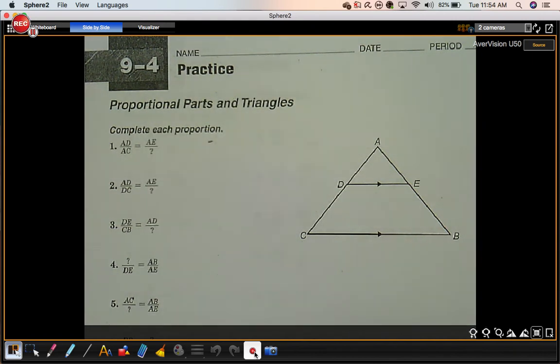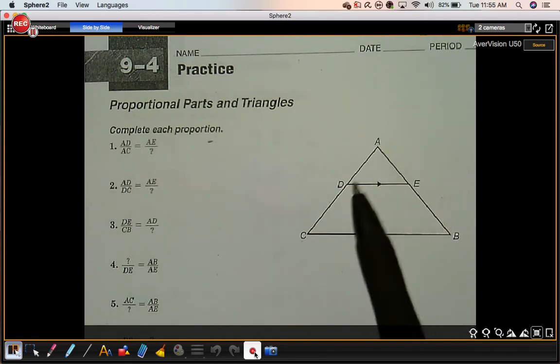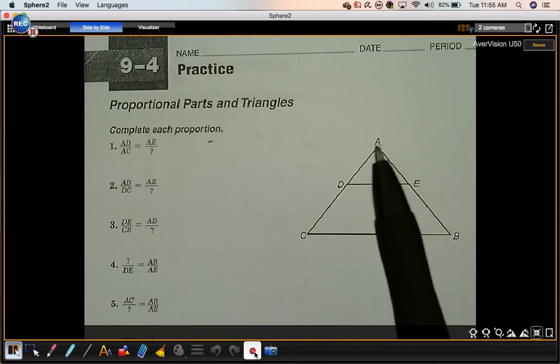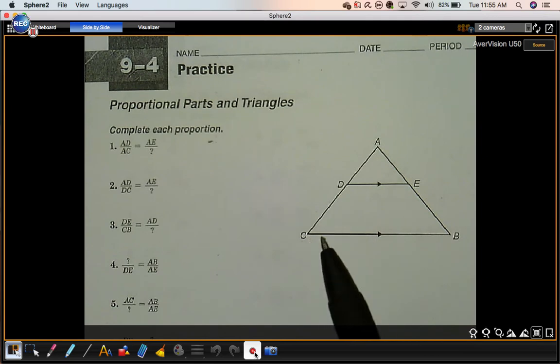This is practice for 9-4. We're going to complete each proportion using this diagram. Segment AD compared with segment AC. This is the left side of the small triangle. Segment AC is the left side of the big triangle.